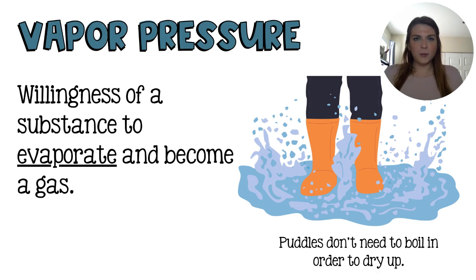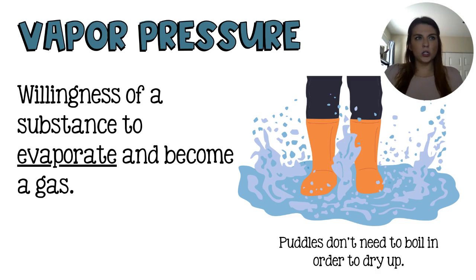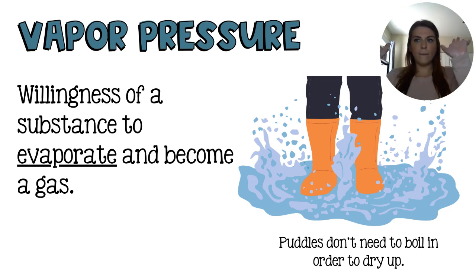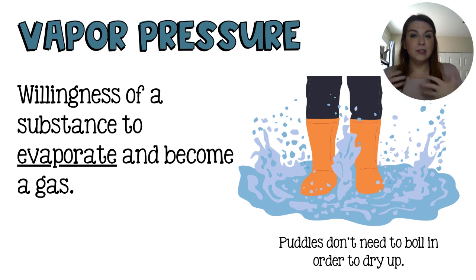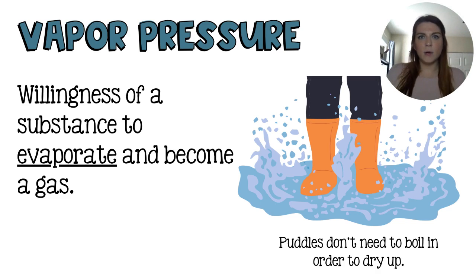If you Google the definition for vapor pressure, you get a really scary definition, but you can summarize it simply. I like to describe vapor pressure as the willingness of a substance to evaporate and become a gas. Snow and rain puddles don't have to boil in order to dry up — they just evaporate. The force with which they push up against the atmosphere to join it is their vapor pressure. Substances that are really willing to evaporate have a high vapor pressure — they push really hard to get up into the atmosphere.